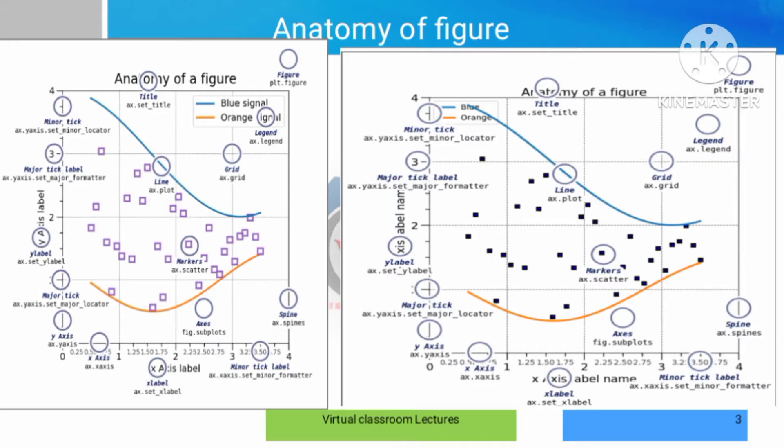The figure has a title. So we have plt.plot, title, x-axis label, and y-axis label. Each of these components has a specific meaning in the matplotlib figure anatomy.